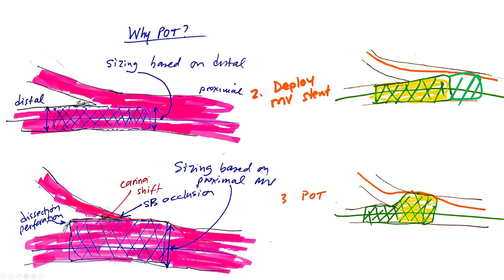The next step is to deliver the stent and then deploy it, jailing the wire into the side branch. The reason for jailing the wire is that it allows access to the side branch if things go wrong. Then, if there is significant mismatch in the size of the proximal main vessel with the distal main vessel, the proximal optimization technique (POT) is performed, in which a short balloon — typically 6 to 8 millimeters — is inflated with its distal marker at the carina, essentially dilating the stent and making good apposition with the proximal main vessel.